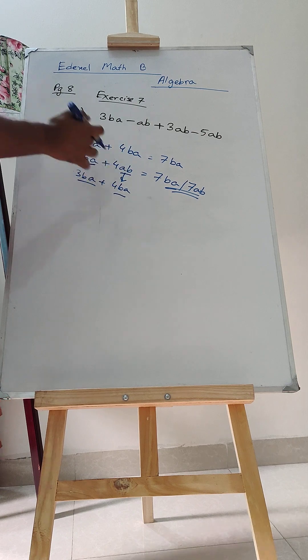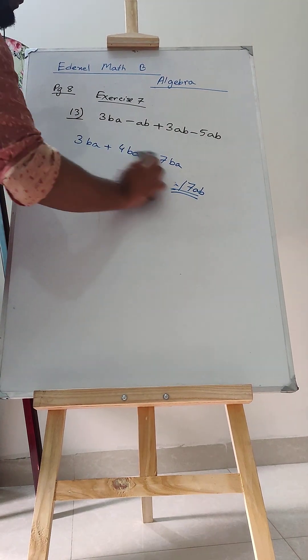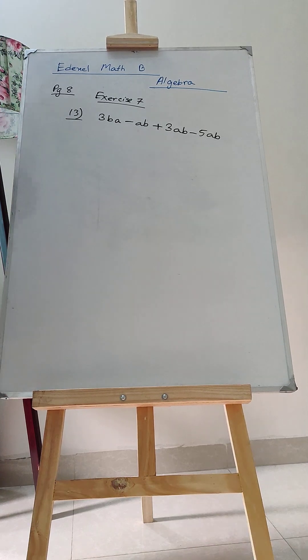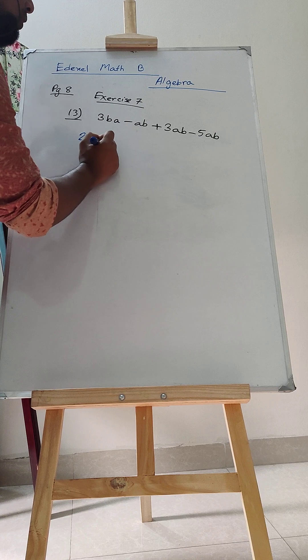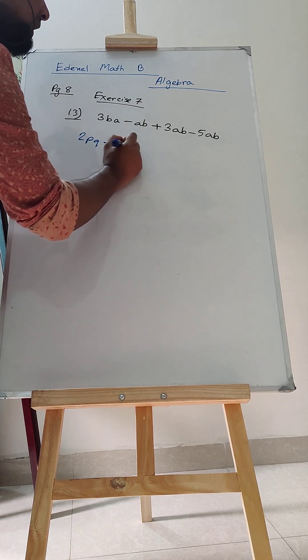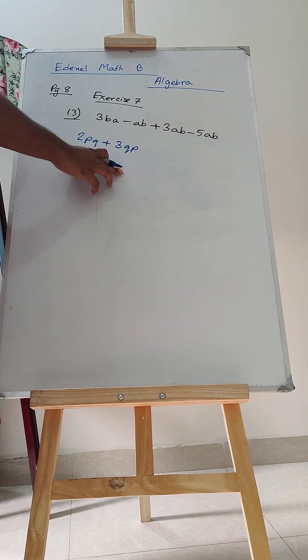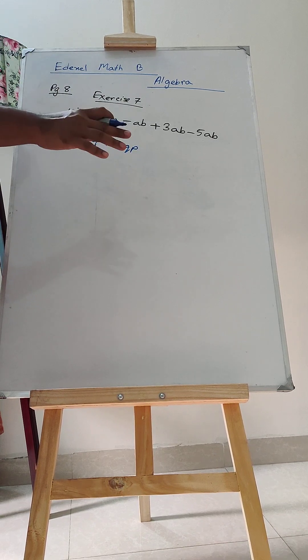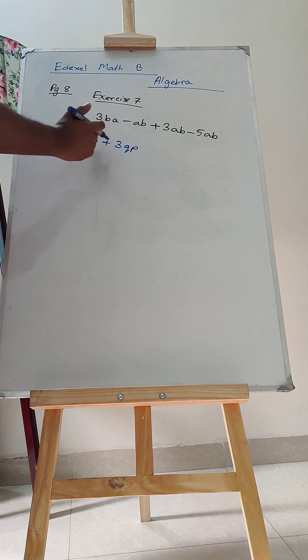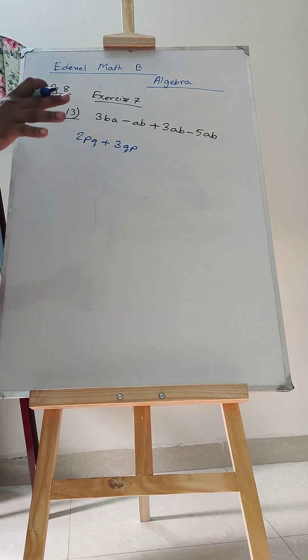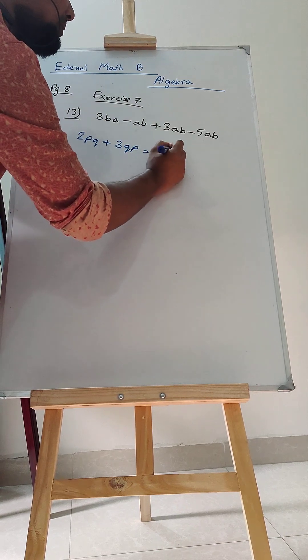So, if it is BA or AB, let me give you another example. Let's say 2PQ plus 3QP. Same goes here. This is QP and PQ, same thing. Even if the chronology is changed, P comes first here, Q comes first here, not a problem. You ultimately get 5PQ.